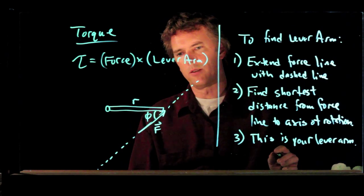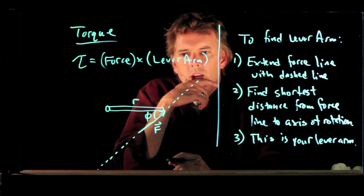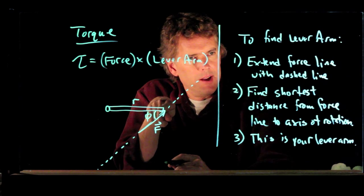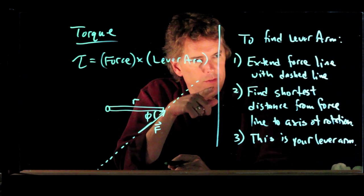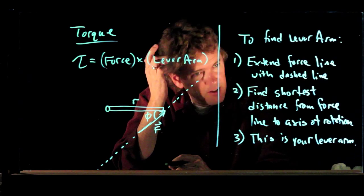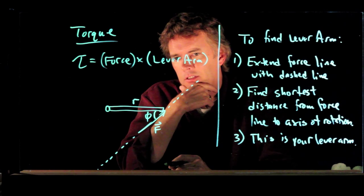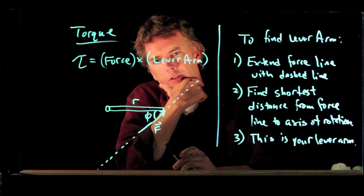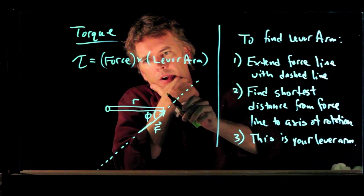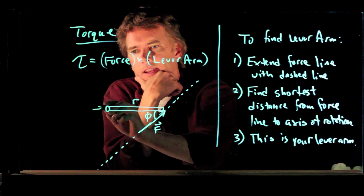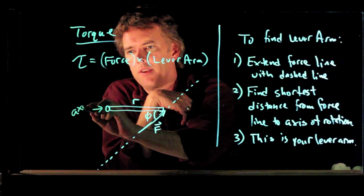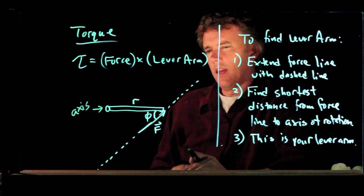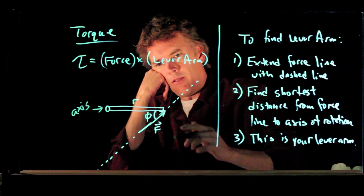So let's go back to our picture. We extended the force line with this dashed line. We need to find the shortest distance from the force line to the axis of rotation. So I need to draw a line somewhere getting to this axis of rotation. This is where our hinges are, and where can I draw a line?